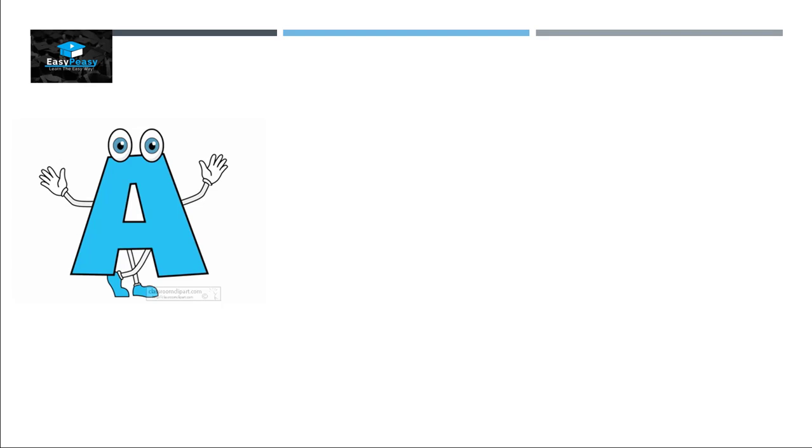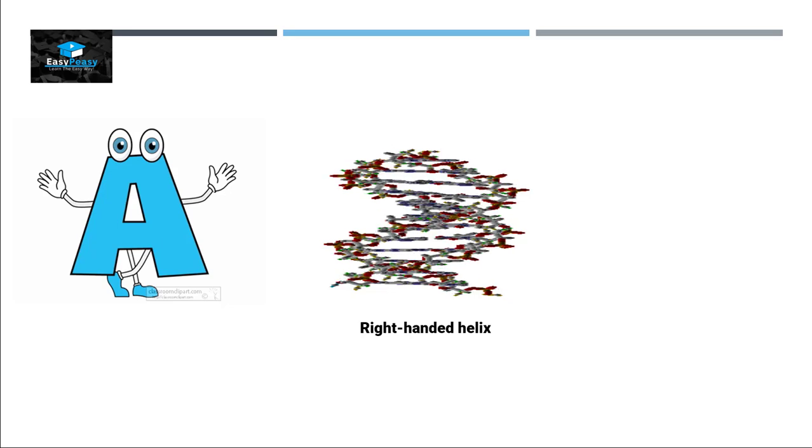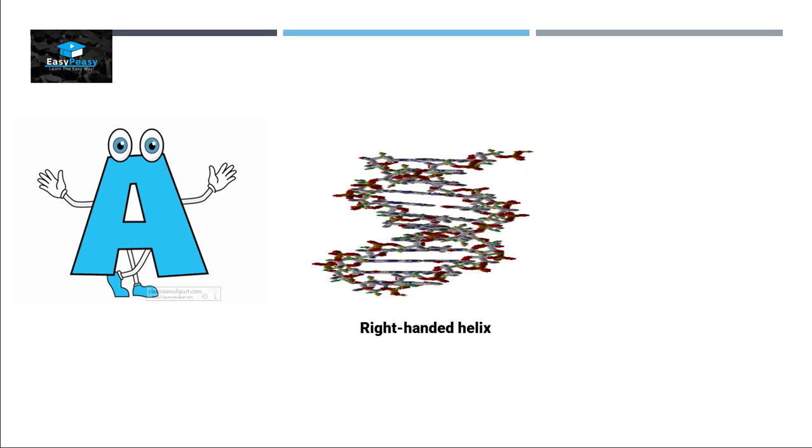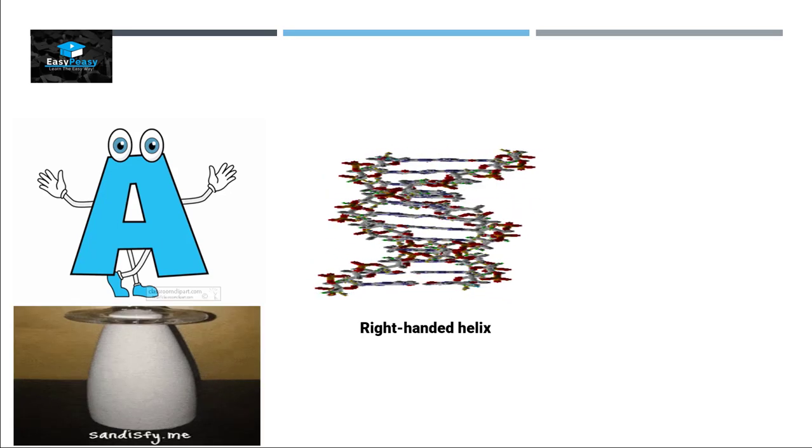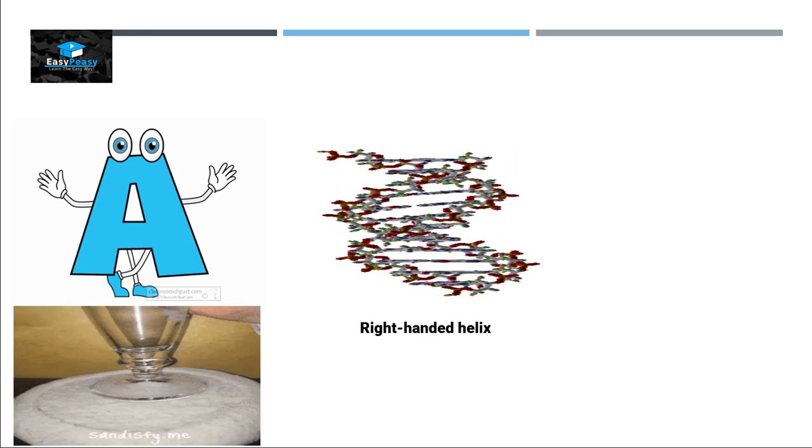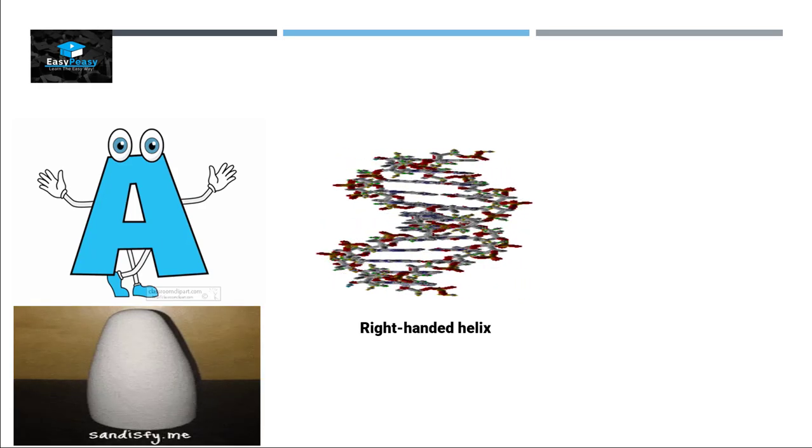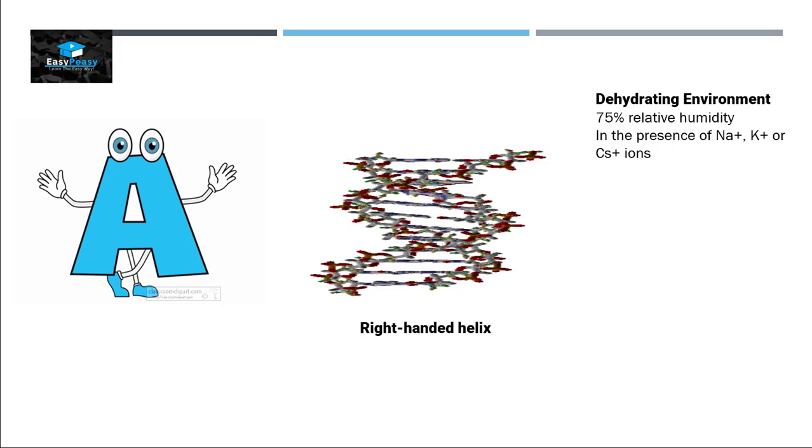Let's discuss form A. Form A is also a right-handed helix. It's just like if we put a weight on form B and it is expanding on the side, so the diameter of form A will be wider than form B and the length of form A will be shorter than form B. Form A usually presents in a dehydrating environment.